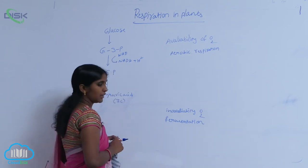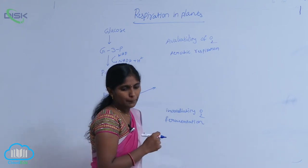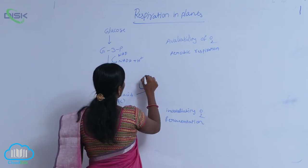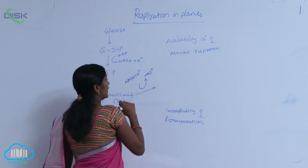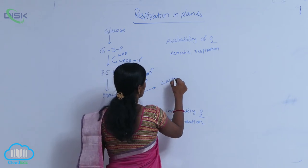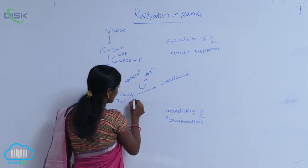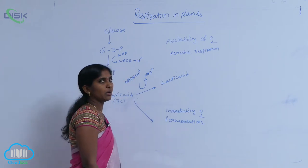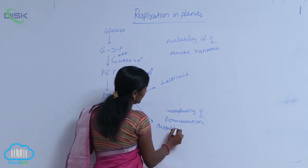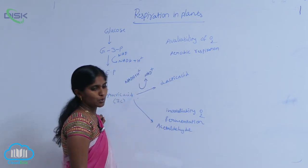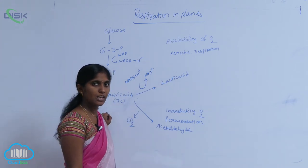In fermentation, pyruvic acid undergoes oxidation. One NADH+ is produced and lactic acid is formed. Whereas in alcoholic fermentation, there are two intermediate stages. One is acetaldehyde production. Acetaldehyde is produced through a decarboxylation reaction carried out in the presence of decarboxylase enzyme.